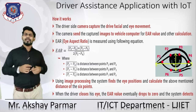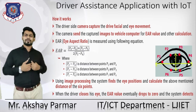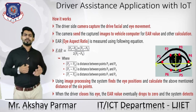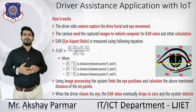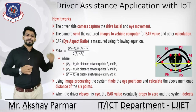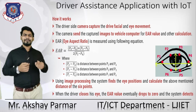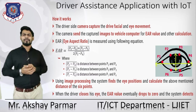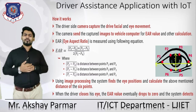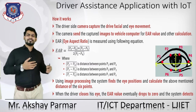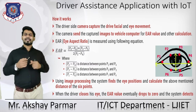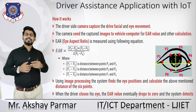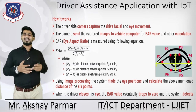The Eye Aspect Ratio (EAR) is measured by the following equation: EAR = (|P2 - P6| + |P3 - P5|) / (2 × |P1 - P4|). Using image processing, the system finds the eye position and calculates the distances between these six points. When the driver closes their eyes, the EAR value eventually drops to zero and the system detects drowsy eyes.